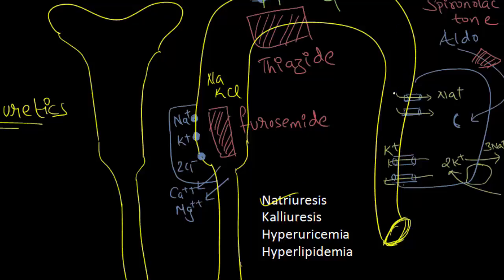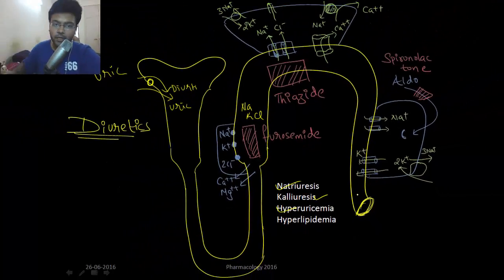It will also lose potassium, therefore it will cause kaliuresis. And at the top, these diuretics are secreted from organic acid transporters in the PCT. And it is the site from where the uric acid is also excreted. So uric acid and the diuretics are transported from the same transporters. So diuretics will compete with uric acid. So it will not allow uric acid to be excreted, causing hyperuricemia. And all the diuretics also cause hyperlipidemia.